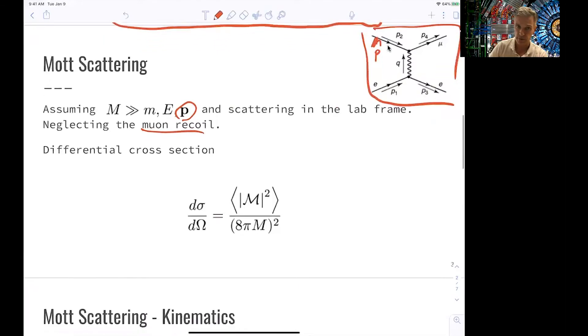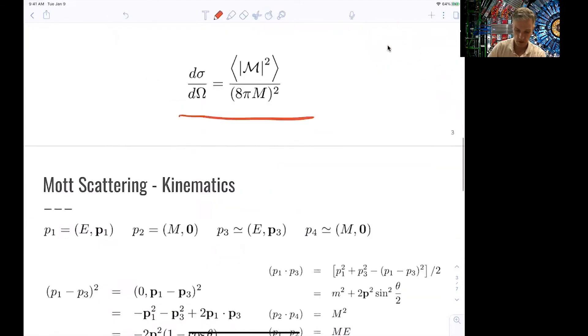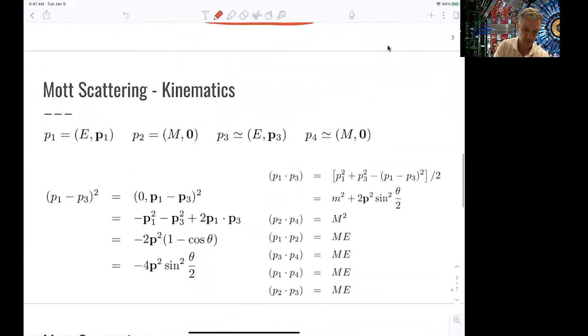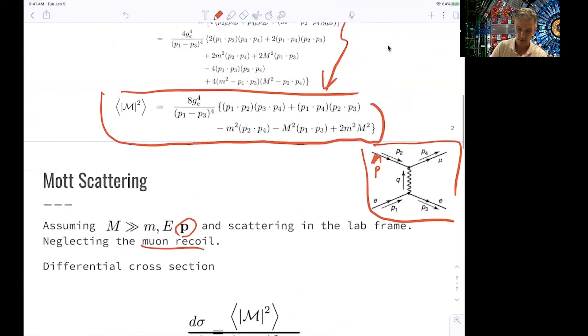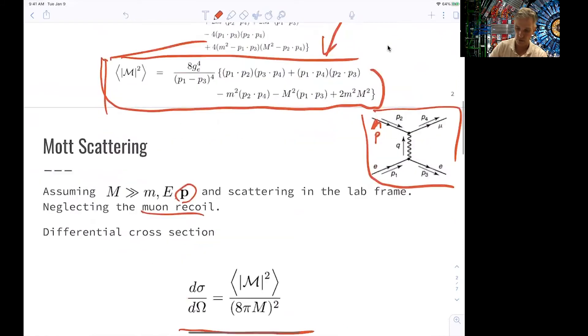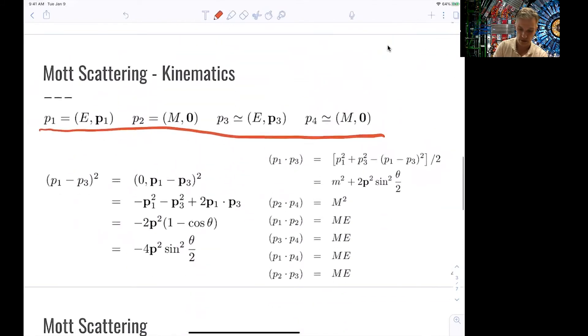If we do that, we can then write the differential cross-section using Fermi's golden rule as a spin-average matrix element squared divided by 2 pi m squared. If you then use this kinematic information, you basically start from this matrix element here. And then you use those four vectors for your momentum of the first, second, third, and fourth particle.